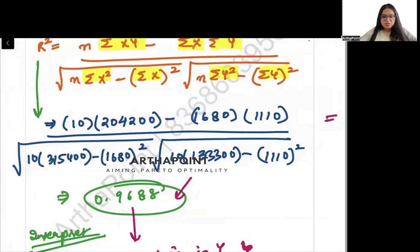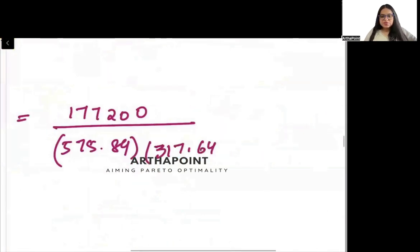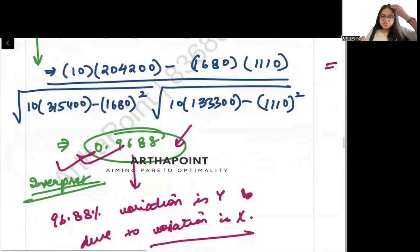This gives 1333000 minus 1110 times 1110. The denominator computes to 575.84 times 317.647. So 177200 divided by this product gives approximately 0.9687. This confirms the answer: 96.87% of variation in Y is due to the variation in X.